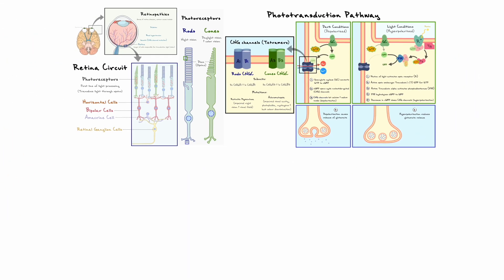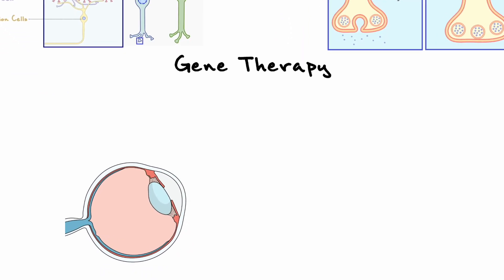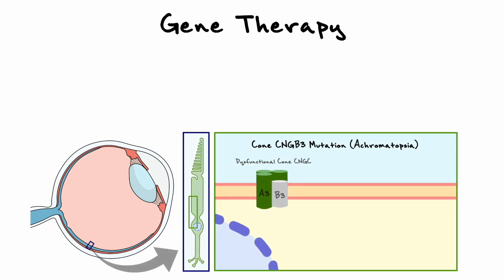As of yet, there are unfortunately no cures available to treat the mutations, but there are some upcoming avenues that show promise in possibly curing these genetic diseases. One such avenue is gene therapy, and to finish our discussion, I would like to give a brief intuition on this method. To do this, let's consider how gene therapy could help cure a cone mutation of the CNGB3 subunit of CNG channels that causes achromatopsia.